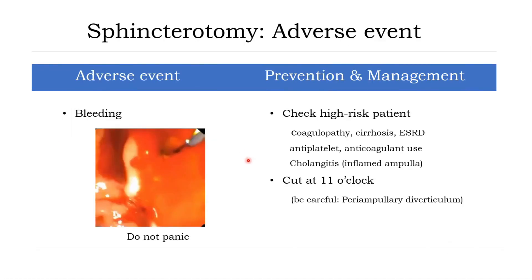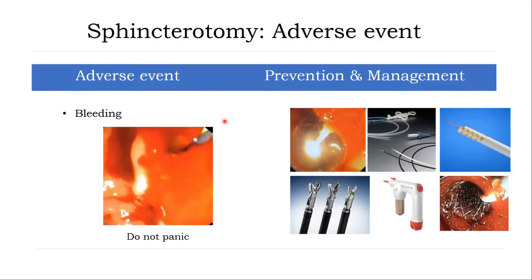If bleeding occurs during sphincterotomy, do not panic. The most important step is to keep the guidewire inside the bile duct and use water irrigation. If you cannot see the area of bleeding clearly, it is recommended to inflate the balloon and tamponade for a few minutes, then re-evaluate. If you can clearly see the bleeding point, you can control it with different accessories: a quack grasper, needle injection, coagulation probe, HemosprayⓇ, or even a fully covered metal stent.